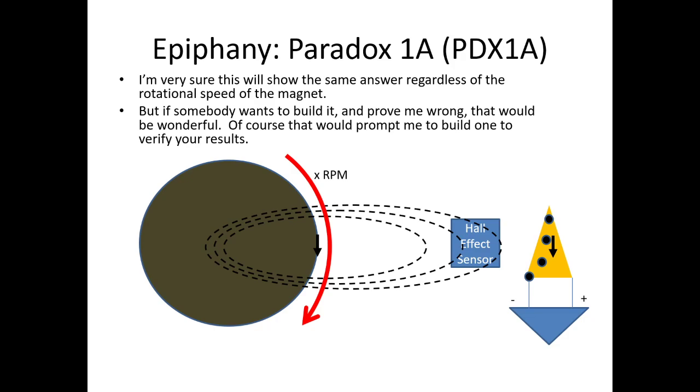I'm not going to waste time building this because I already know it's going to work the way I expect - there's going to be no difference here measured by this Hall effect sensor. However, if somebody wants to build it and prove me wrong, that would be wonderful. I like being proven wrong because it helps me improve my science. I want to know where I'm wrong so I can improve the science.